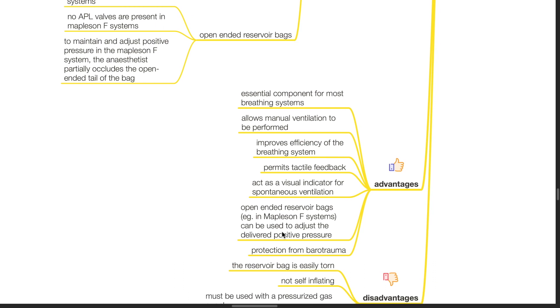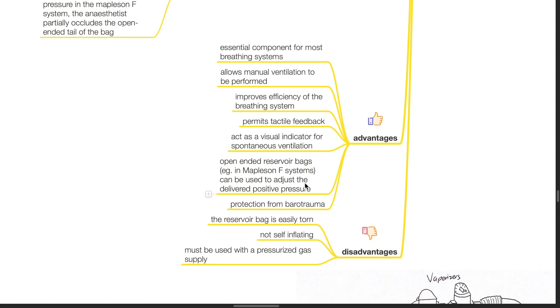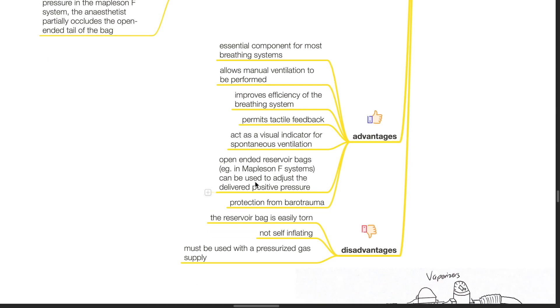Advantages of the reservoir bag. It is an essential component for most breathing systems. It allows manual ventilation to be performed. It improves the efficiency of the breathing system and permits tactile feedback. It acts as a visual indicator for spontaneous ventilation. Open-ended reservoir bags can be used to adjust the delivered positive pressure. And these bags convey protection from barotrauma.